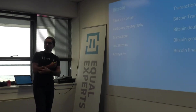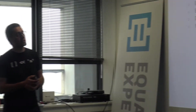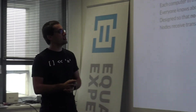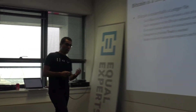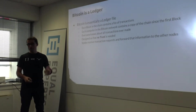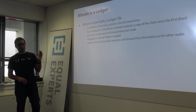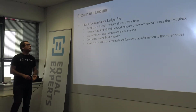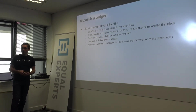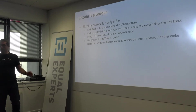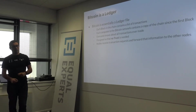That's essentially everything you need to know about blockchains. Now, Bitcoin. Bitcoin is essentially a ledger — a list of transactions. It doesn't store balances like 'Alice has $100 and Bob has $130.' It just contains a list of transactions. Each computer in the Bitcoin network contains a copy of the chain since the first block, so everybody knows the complete history of Bitcoin since the beginning of time. Everybody knows about all the transactions ever made by anyone.